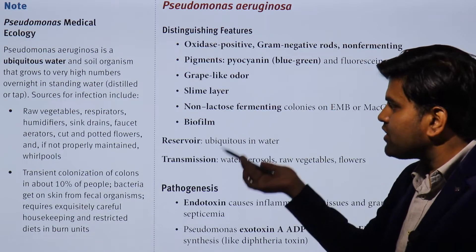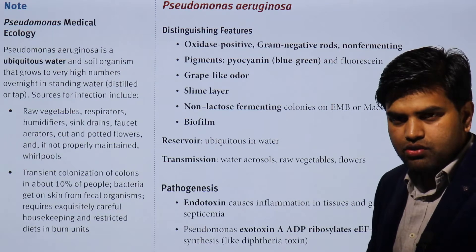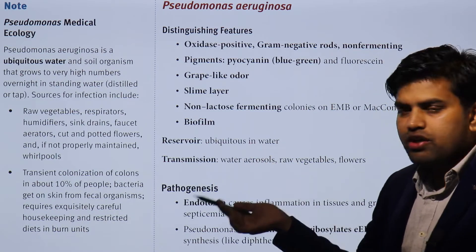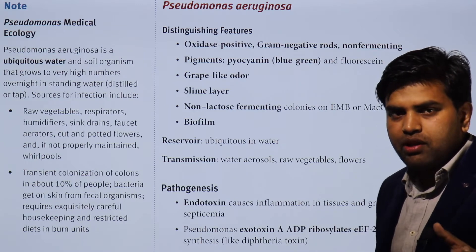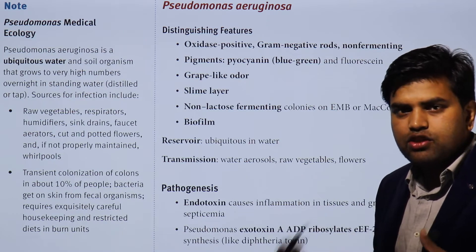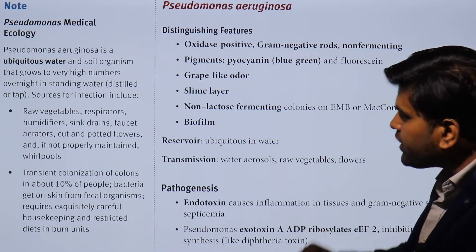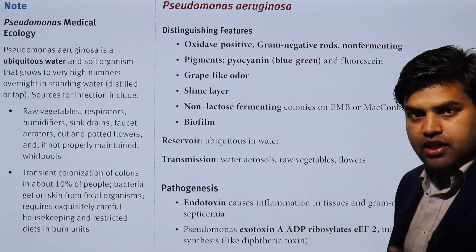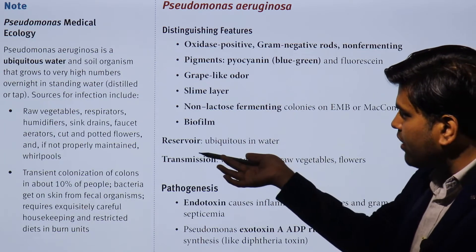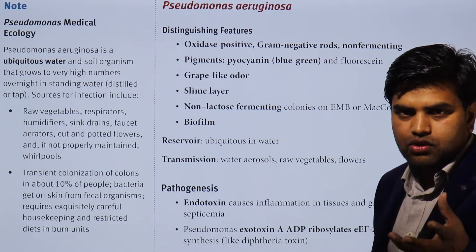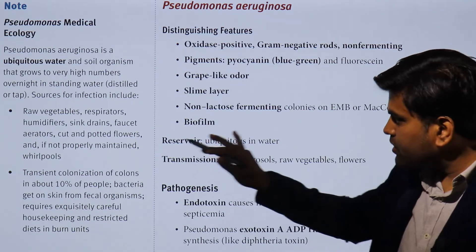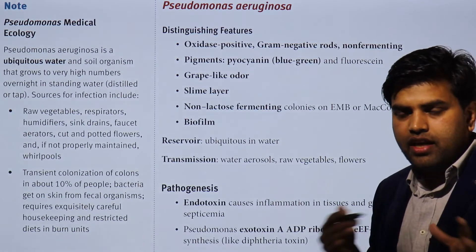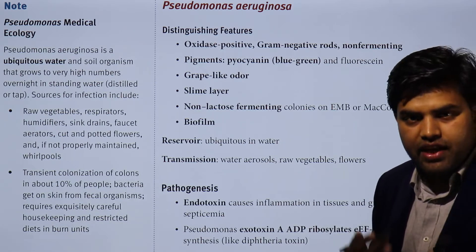Since Pseudomonas is found in soil and water, sources of infection include raw vegetables, respiratory humidifiers, sink drains, faucet aerators, cotton, and flowers. There can even be transient colonization in about 10% of healthy people, meaning this bacteria can be part of normal flora in the gut. In the burn unit, sources like water, raw vegetables, and humidifiers can infect vulnerable patients. Complete isolation and restriction of these possible sources is very important in burn units, operating theaters, and anywhere patients are exposed through skin breaches.